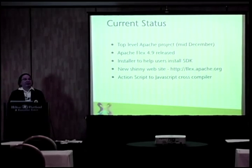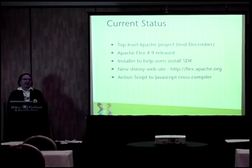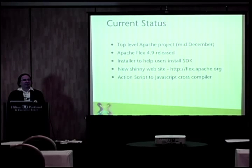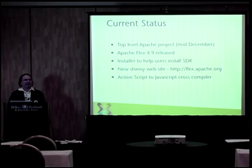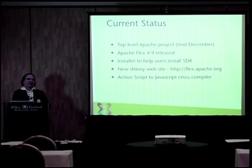The current status is we are a top-level Apache project — we were voted in in mid-December. We have Apache Flex 4.9 released; that is the second release. The first was a parity release, basically the same as the Adobe version of the SDK, just to make sure we had done all the right stuff. We've also created an installer to help people install the software — it has a lot of third-party libraries that are for various licensing reasons not part of the software download. We have a nice new website at flex.apache.org, and there's been a lot of work in the last couple of months on an ActionScript to JavaScript cross-compiler. We can now take any pure ActionScript that doesn't involve any Flash Player calls and convert that straight to JavaScript, and it will just work.